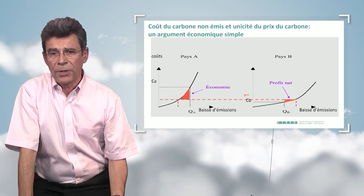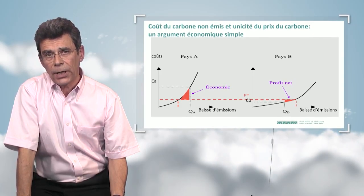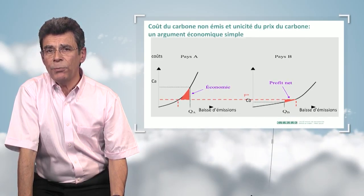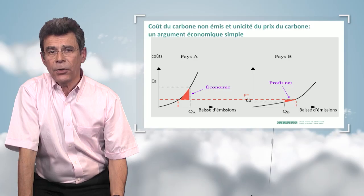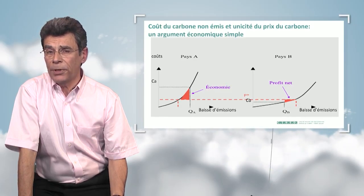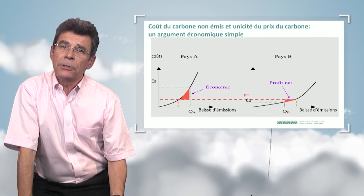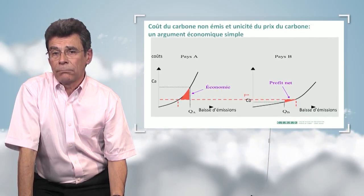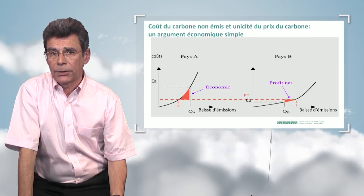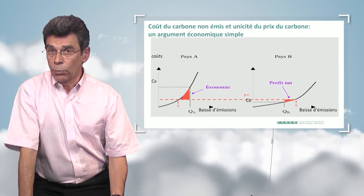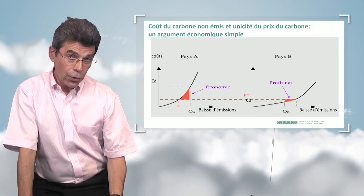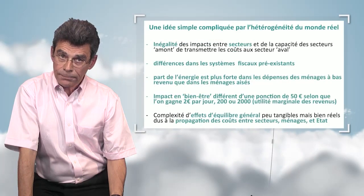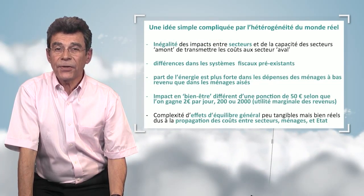For this, country A will reduce emissions less and country B will reduce emissions more. But country A will have saved the equivalent of the red triangle, whereas country B will export emissions and will earn the equivalent of the smaller red triangle as net profit. It's a matter of common sense — it's a win-win situation if there is a single price for carbon.